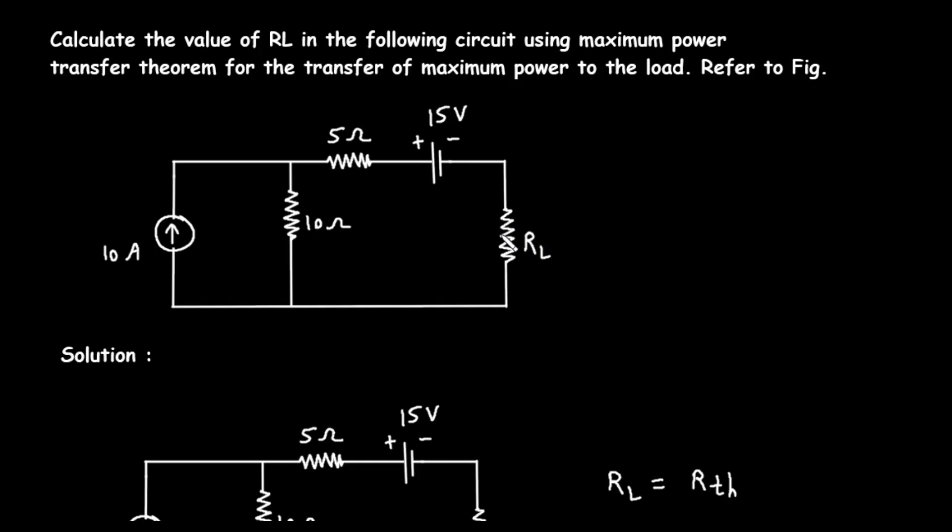Let's begin by examining the original circuit diagram provided in the figure. On the far left, we have an ideal current source. The arrow inside the circle indicates the direction of the current, and the label 10A tells us it supplies a constant 10 amperes of current. In parallel with this current source, we see a resistor with a value of 10 ohms.